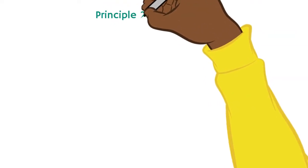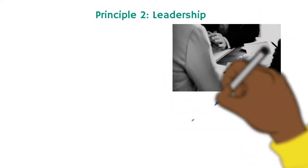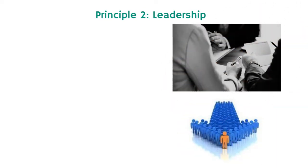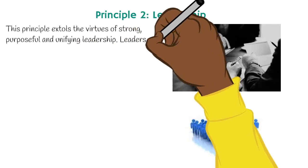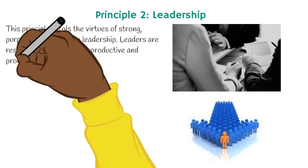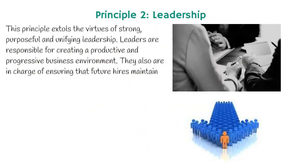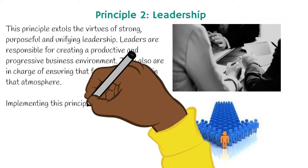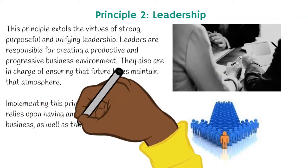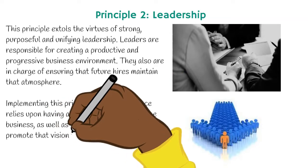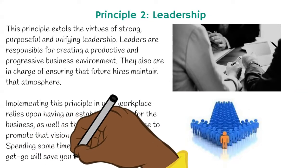Principle two: leadership. This principle extols the virtues of strong, purposeful, and unifying leadership. Leadership are responsible for creating a productive and progressive business environment. They also are in charge of ensuring that future hires maintain that atmosphere. Implementing this principle in your workplace relies upon having an established vision for the business, as well as the right leaders in place to promote that vision to the rest of the team. Spending some time getting this right from the get-go will save your time and stress in the future.